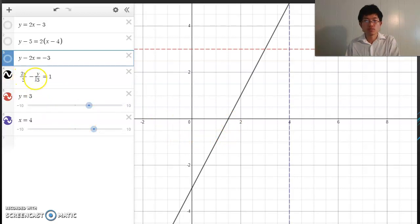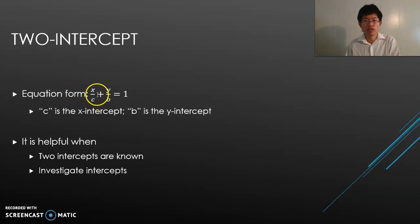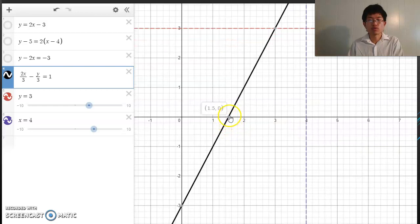And the last one is the two-intercept form: x over something and y over something. Notice that it has 3 on the bottom. Since we have a negative right here, the intercept is -3. You can say it's plus y over -3 if you want to. And right here, 2x over 3, it's actually x over 3 and a half, which is 1.5.